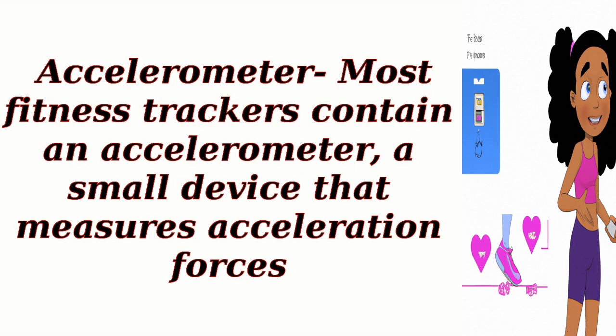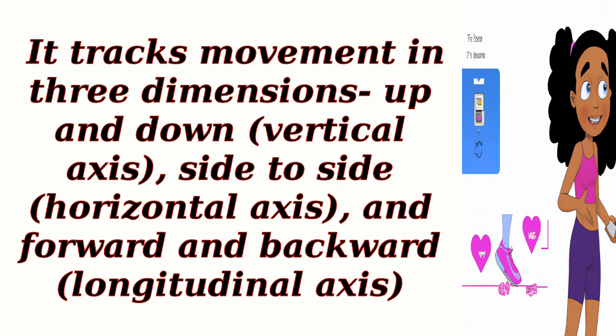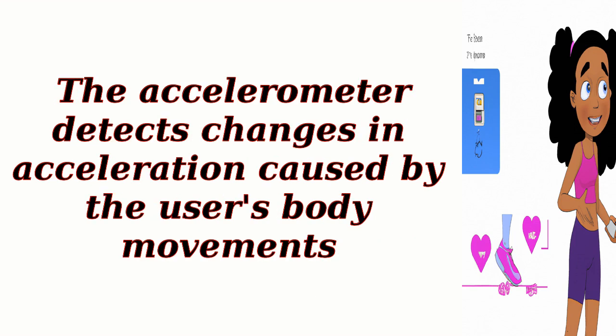Accelerometer. Most fitness trackers contain an accelerometer, a small device that measures acceleration forces. It tracks movement in three dimensions: up and down (vertical axis), side to side (horizontal axis), and forward and backward (longitudinal axis). The accelerometer detects changes in acceleration caused by the user's body movements.